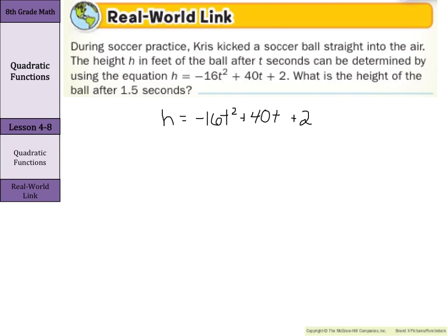Just be careful with your t's and pluses — sometimes they can look similar. Our height is h, and that's what we're solving for. Our time is t seconds, and we're given 1.5 seconds. So every time we see the variable t in our equation, we need to substitute in 1.5. So: h equals negative 16 times 1.5 squared plus 40 times 1.5 plus 2.